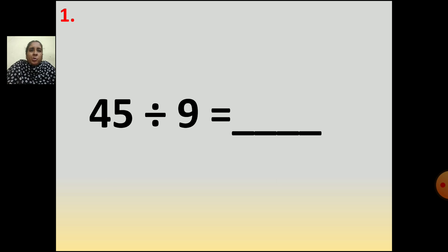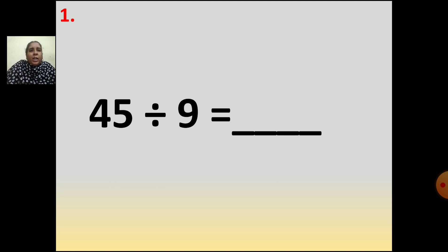Now the first question is 45 divided by 9. Here what you are going to do — you have to divide. So you will say the table of 9. In the table of 9, when you get 45, you have to find the answer. So you will say the table of 9.